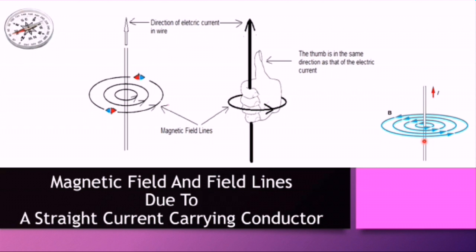By reversing the direction of current, the direction of the magnetic field also reverses. Magnetic field is created by moving charges — in the case of a current-carrying conductor, these moving charges are free electrons. In non-magnetic materials, the fields produced by the electrons cancel each other out.